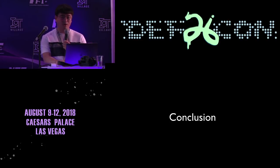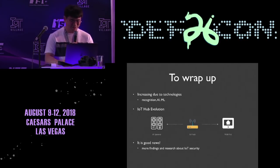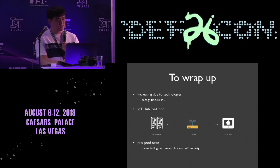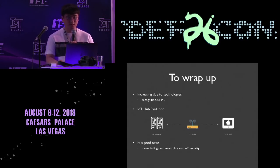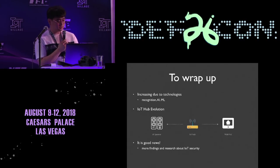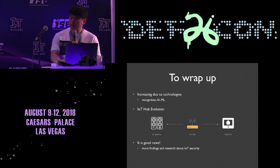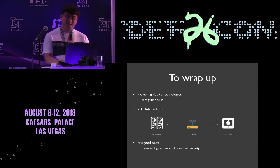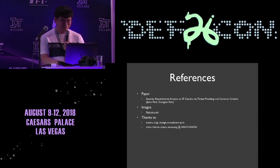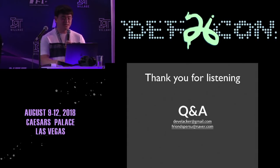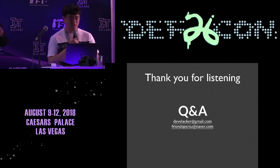In conclusion, we found many different threats at the IoT hub and smart home services are increasing due to technologies like voice recognition, AI, and machine learning. The IoT hub is also evolving to the form of AI speakers and more. This gives us plenty of IoT security research to do in the future, and we will share more findings going forward. Thank you for listening. We are happy to take questions.